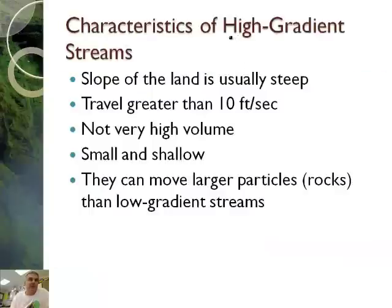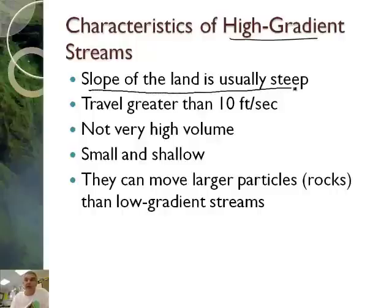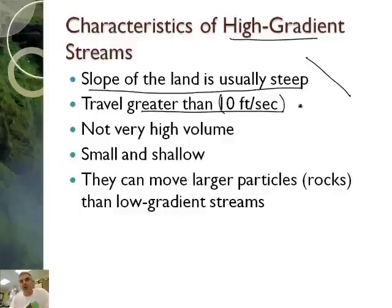Let's go back to the concept of high gradient streams. What are some characteristics? The first one is the slope of the land is usually steep — very steep. They travel greater than 10 feet per second. Remember we talked about how fast they travel — 10 feet per second is considered fast.